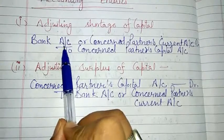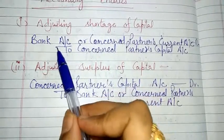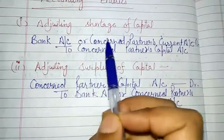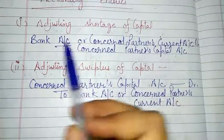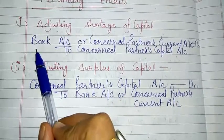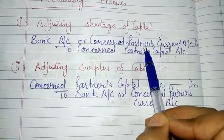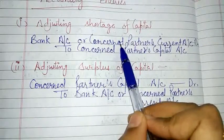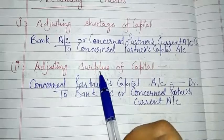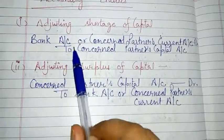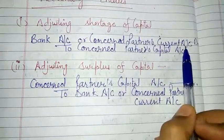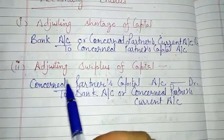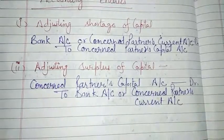It depends on the question — if cash payment is asked, you will use the bank account. If adjustment is made through the partner's current account, then the entry will be: Bank Account or Concerned Partner's Current Account To Concerned Partner's Capital Account. This is the journal entry when there is a shortage of capital for a concerned partner.